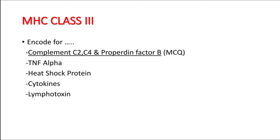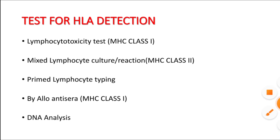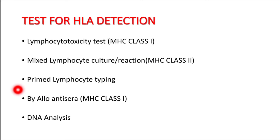MHC class 3 molecules encode for complement proteins C2, C4, properdin factor B, tumor necrosis factor alpha, heat shock proteins, cytokines, and lymphotoxin. For HLA detection, the lymphocyte toxicity test can be done for MHC class 1, while mixed lymphocyte culture or reaction can be done for MHC class 2. Other methods include primed lymphocyte typing, DNA analysis, and using allo-antisera.